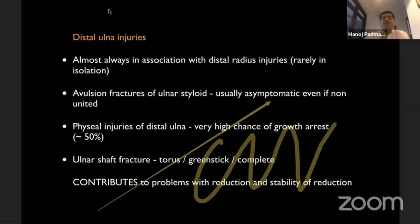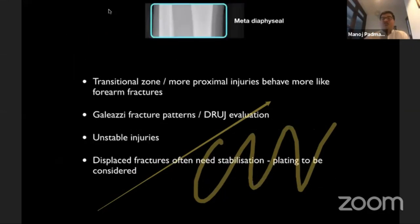A few slides on distal ulnar injuries. They never occur in isolation — there is always a distal radius injury. It's important to get a complete diagnosis. Avulsion fractures are innocuous injuries; even if they remain as non-union, they are usually asymptomatic. Physeal injuries of the distal ulna, especially completely displaced ones, can cause significant growth arrest — compared to distal radius growth arrest of about 2-4%, distal ulnar physeal arrest is about 50%. Moving further up, transitional injuries or metadiaphyseal fractures behave more like forearm injuries, are inherently unstable, and you need to think about Galeazzi fracture patterns. These are well known in the adolescent age group. Evaluate the distal radio-ulnar joint. In displaced fractures in the older child, because it is difficult to get satisfactory pin configuration, you may need to consider plating.